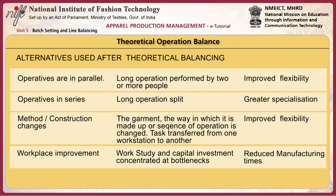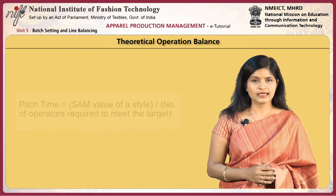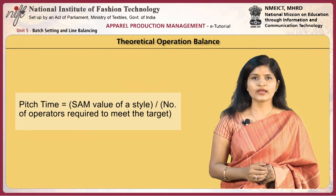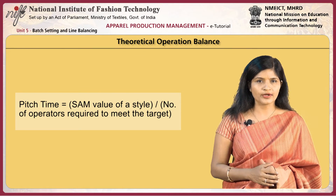Theoretical operation balance: the number of elements should match the number of people calculated in the labor requirement. Alternate arrangements in theoretical balancing include putting operators in parallel, operators in series, method or construction changes, and workplace improvement. Pitch time is the theoretical operation time each operator should take for a planned balanced line. It is calculated as the SAM value of the style divided by the number of operators required to meet the target.